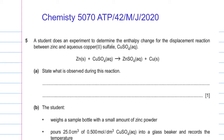Bismillahir Rahmanir Raheem. This is Miss Aisha Manzoor and you are watching my channel Chemistry Solutions. Today in this lesson we are going to attempt question number 5 from the ATP past paper variant 4.2 in the session May June 2020.